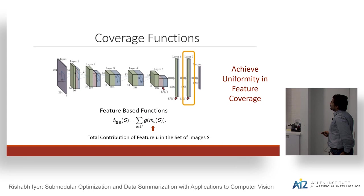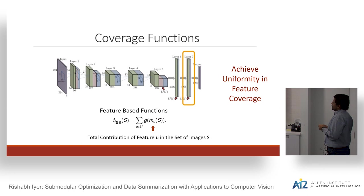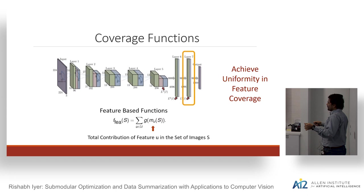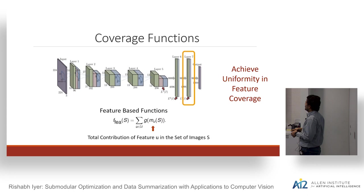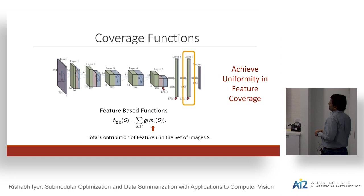Another class of coverage functions are feature-based functions. Here we take a feature — for example, a particular layer of a convolutional network — and want coverage in this feature space. Treating each dimension of the feature vector as a concept, through a concave over modular construction we want uniformity over all concepts that are covered. This is similar to the coverage functions defined earlier but a slightly different model.